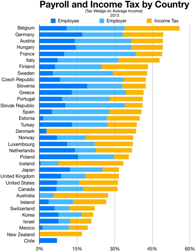Pitt's income tax was levied from 1799 to 1802, when it was abolished by Henry Addington during the Peace of Amiens. Addington had taken over as Prime Minister in 1801 after Pitt's resignation over Catholic emancipation. The income tax was reintroduced by Addington in 1803 when hostilities with France recommenced, but it was again abolished in 1816, one year after the Battle of Waterloo.